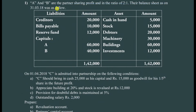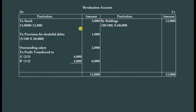The first thing is to prepare the revaluation account. We need columns for debit, credit, particular, and amount. Items belonging to the credit side go on the credit side, and items belonging to the debit side go on the debit side. To understand which side each item belongs to, you should watch the last video where I went through all the revaluation account journal entries. Understanding the basic concept will make a big difference.